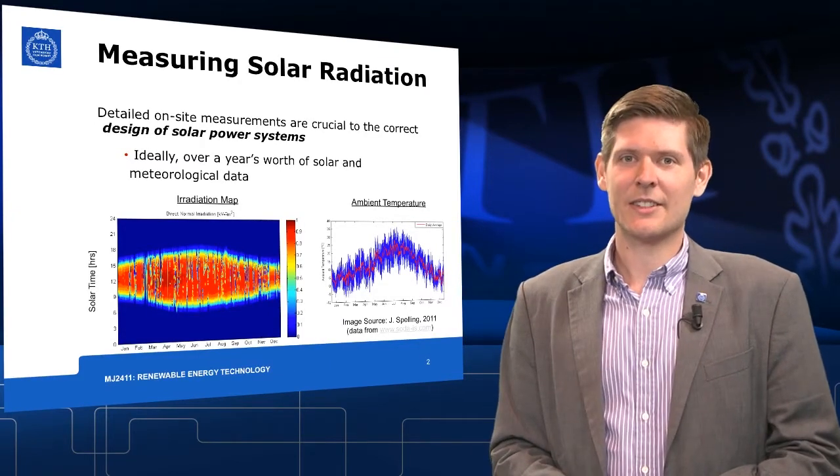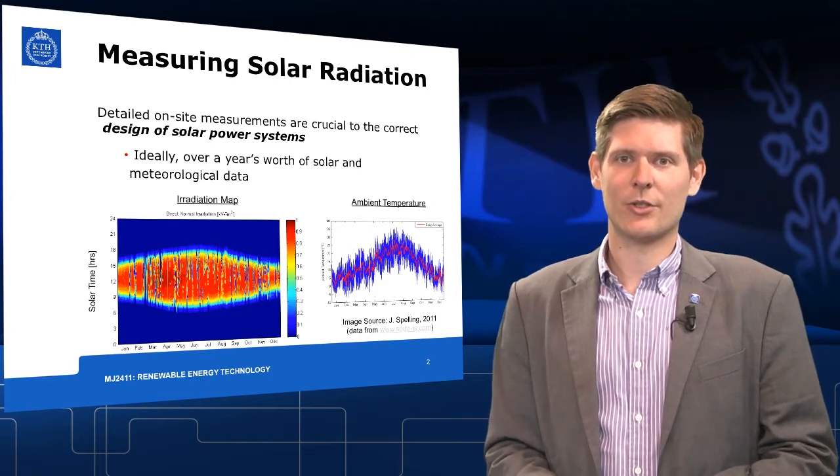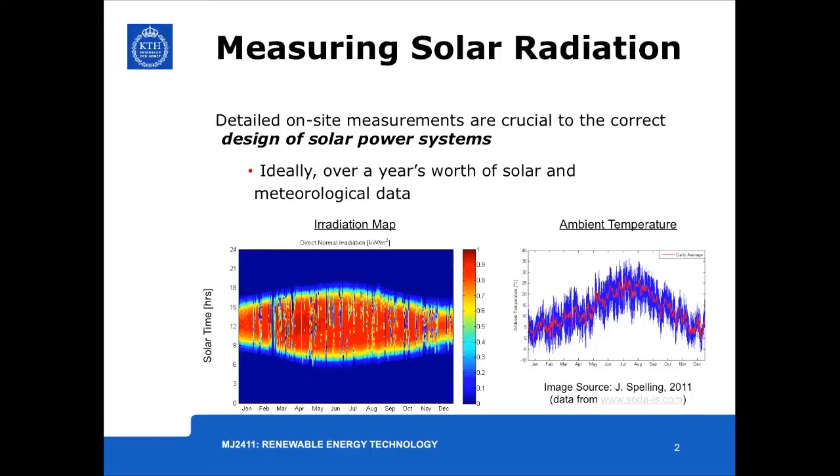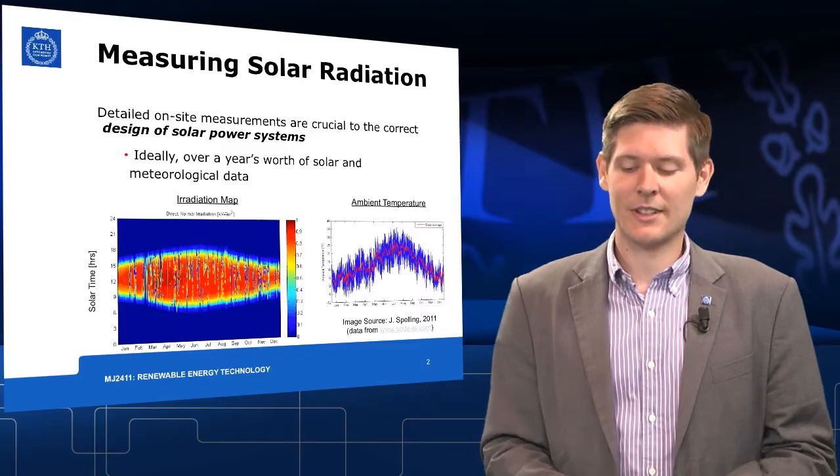For the correct design of any solar system, it is important to know the boundary conditions at site. These boundary conditions include the solar radiation, the ambient temperature and also wind speed measurements and of course other measurements as well.